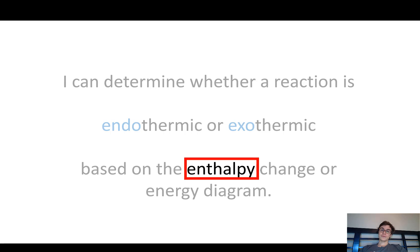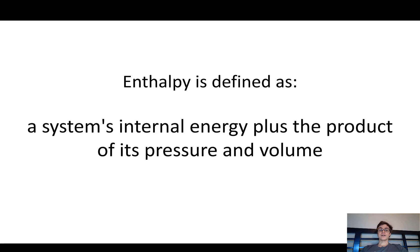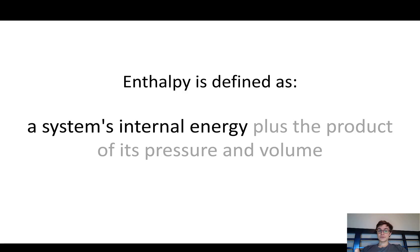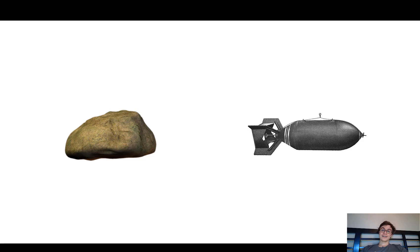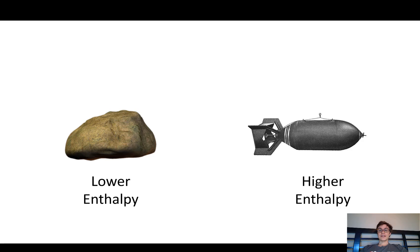We'll start with enthalpy. Enthalpy is technically defined as a system's internal energy plus the product of its pressure and volume, but I want you to just focus on this: enthalpy is how much energy is inside something — a system. For example, a rock and a bomb. The bomb could blow up a whole city — it has a lot of fire and heat and motion inside of it, potentially ready to explode out. But the rock can't do very much. So we would say the bomb has higher enthalpy and the rock has lower enthalpy.